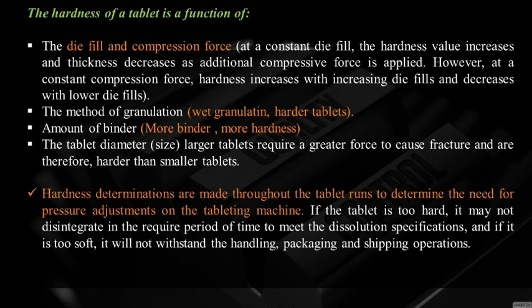Hardness determinations are made throughout the tablet run — generally at a fixed interval of 15 minutes — to determine the need for pressure adjustment on the tableting machine. If harder tablets are produced, pressure needs to be decreased; if softer tablets are produced, pressure needs to be increased. If the tablet is too hard, it may not disintegrate in the required period of time to meet dissolution specifications; if too soft, it will not withstand handling, packaging, and shipping operations.